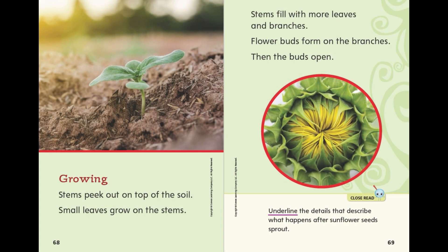Growing. Stems peek out on top of the soil. Small leaves grow on the stems. Stems fill with more leaves and branches. Flower buds form on the branches, then the buds open.